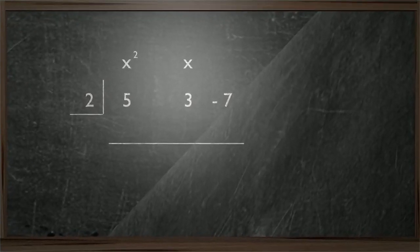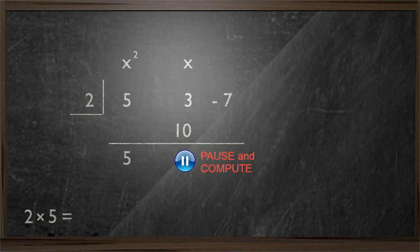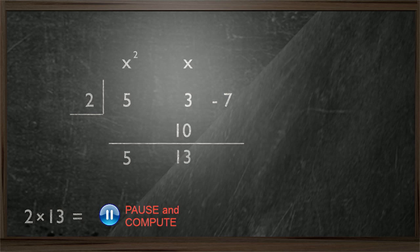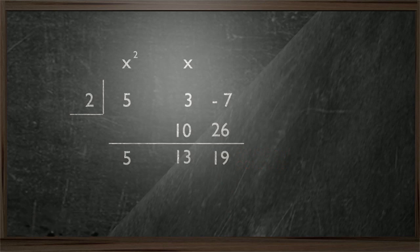Now we'll drop the leading coefficients straight down. We'll multiply this by our A value and get 10. Which we'll add to the next column. Which gives us 13. We'll multiply this by 2 to get 26. Add this to the last column to get 19. And since that's the last column, we're done.